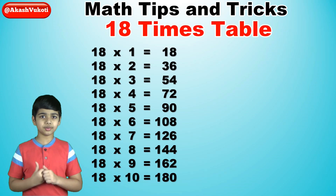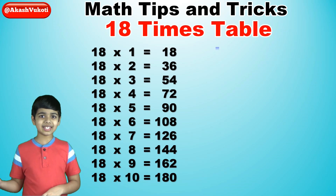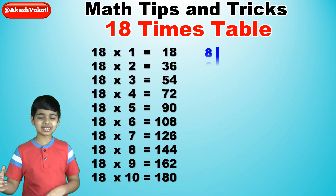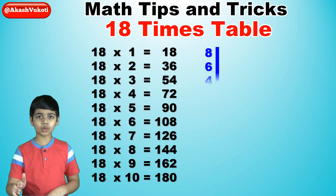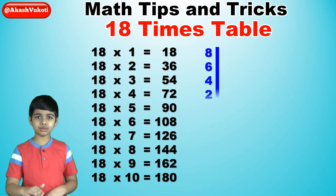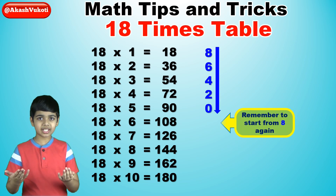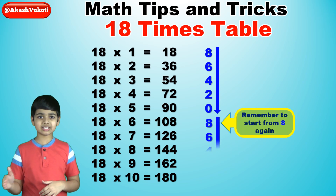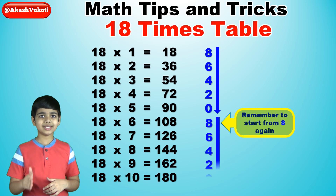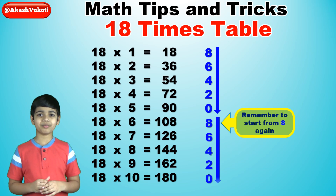So this would be 8, 6, 4, 2, 0. Do it again: 8, 6, 4, 2, 0.